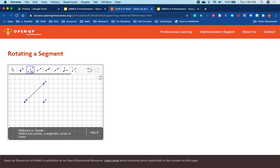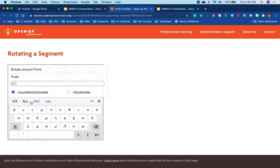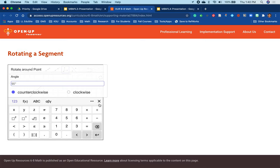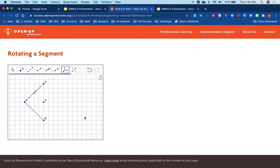And this command here is the midpoint. So it's asking us to select two points, a segment, circle, or conic. So we can select these two points, and it will give us the midpoint. So what happens if I rotate this line segment about C? First, I want to show you 90 degrees counterclockwise. See how it's perpendicular to that line?